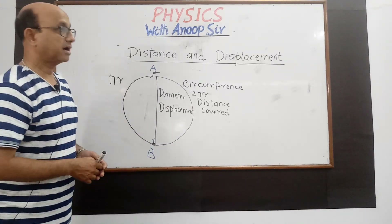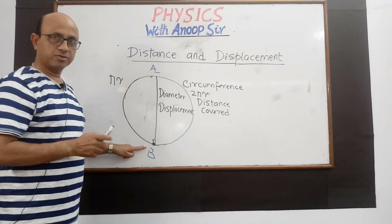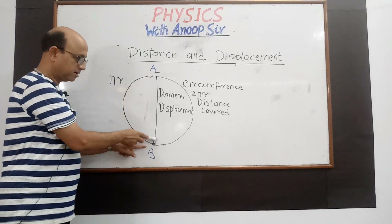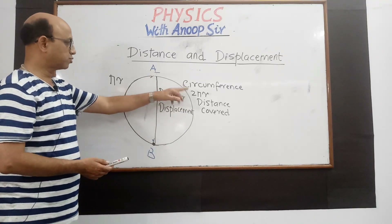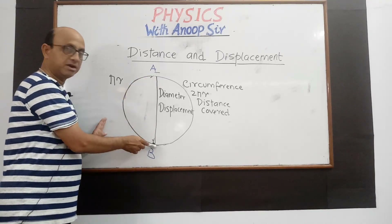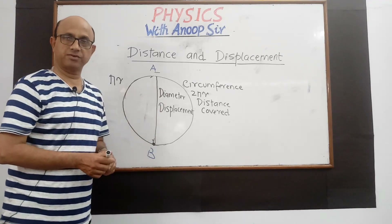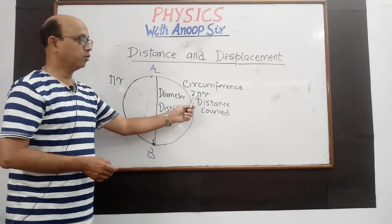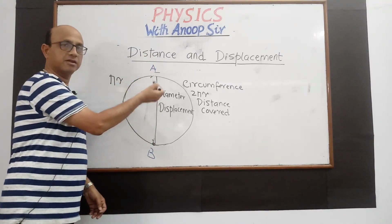अब displacement की बात करें — man starts from A and reaches B. Distance covered हुआ πr, लेकिन displacement हुआ the shortest distance between two points along the diameter — that is 2r. अब B से A तक वापस आया तो total distance हो गया πr + πr = 2πr. लेकिन displacement: A से B आने में plus diameter, B से A जाने में minus diameter — so net displacement after one complete rotation will be zero.